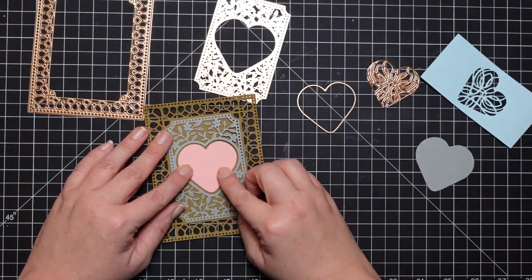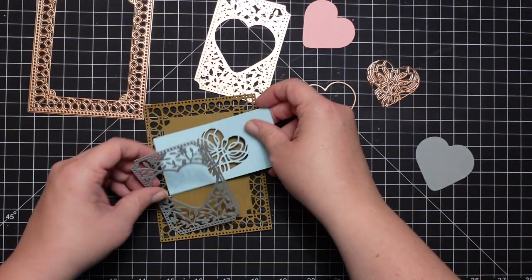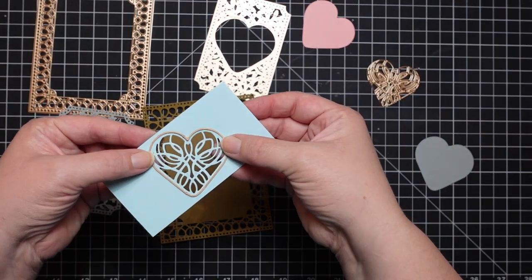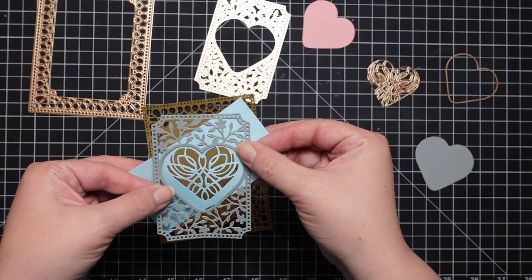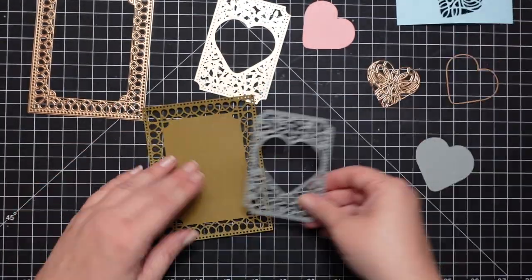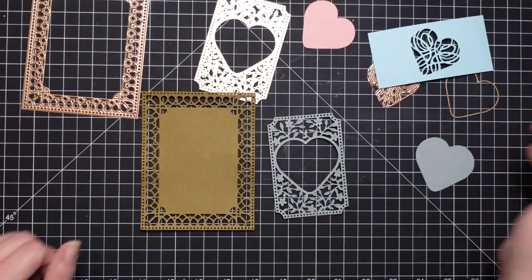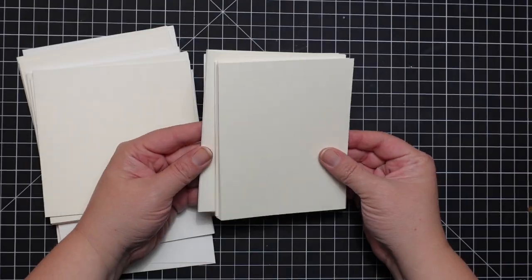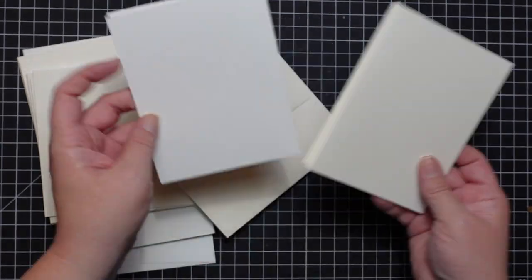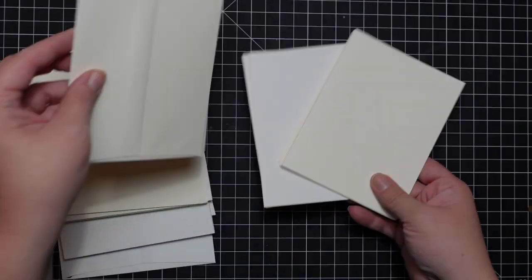So you can layer them like this as I'm showing you. If you're like me, these types of little frilly, scripty, swirly dies I have a hard time with, I'll be honest. It's hard for me to put the cards together, but I figured it out and I thought it would be helpful to show you all of them die cut out.